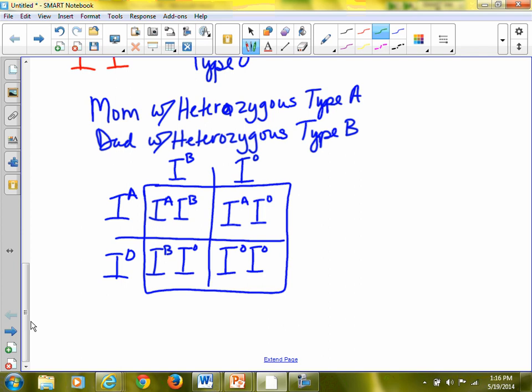The phenotypes are type AB, type A, type B, and type O. 25% chance of each. And then, you know, you could ask different questions. What are the chances of having a type AB offspring? What are the chances of having a type O offspring? In this case, it's 25% chance each.